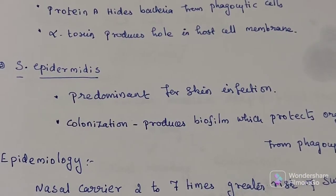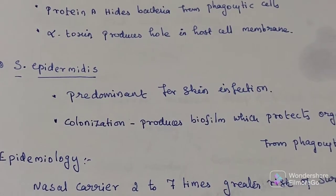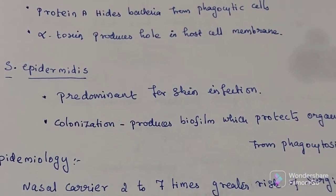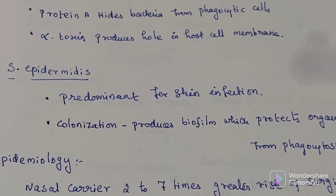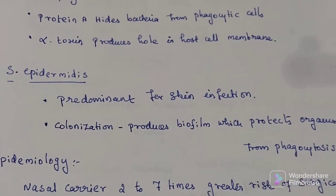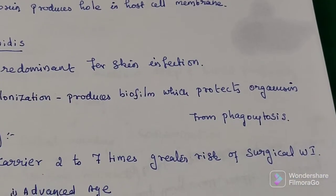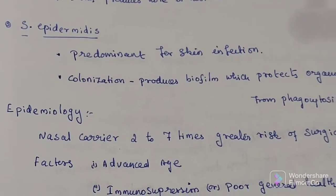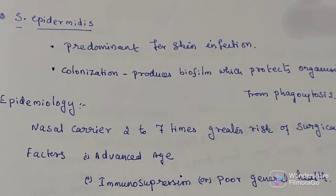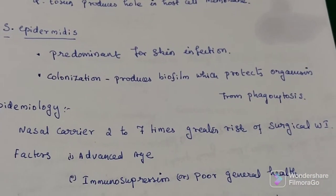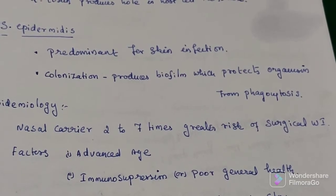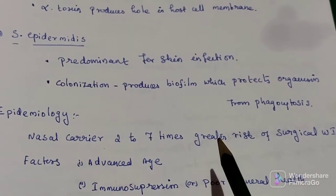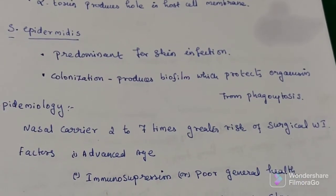Staphylococcus epidermidis is the predominant organism for skin infection. It allows colonization by producing a biofilm which protects the organism from phagocytosis. Regarding epidemiology — how it spreads person to person — a nasal carrier has a 2 to 7 times greater risk of surgical wound infection compared to non-carriers.